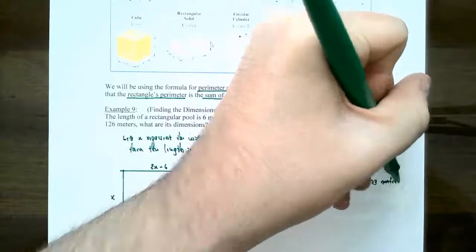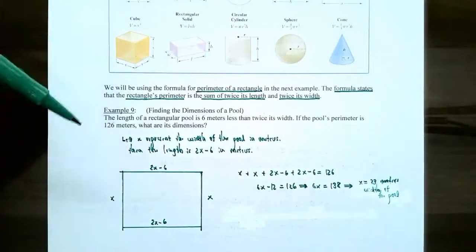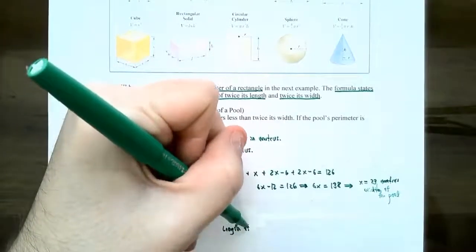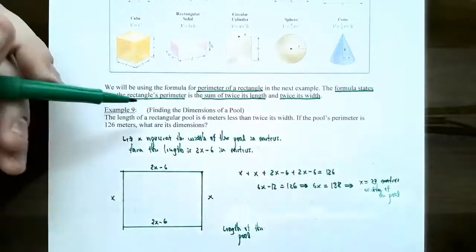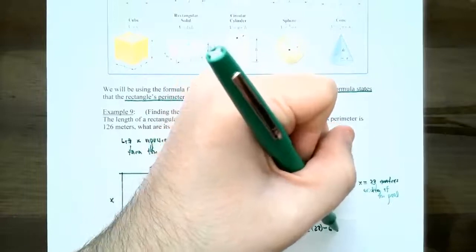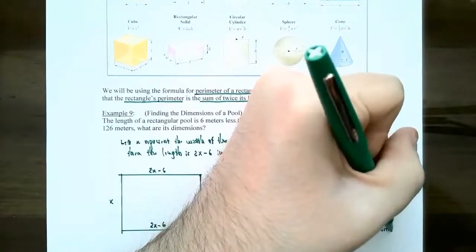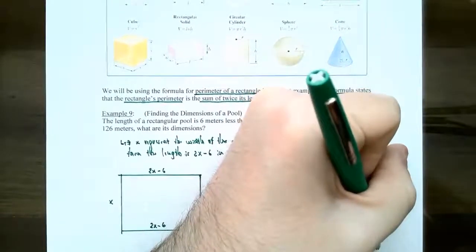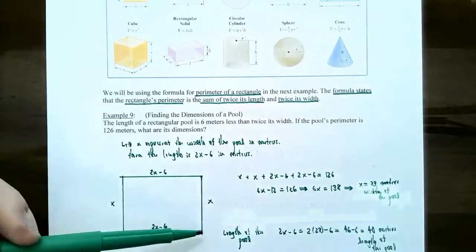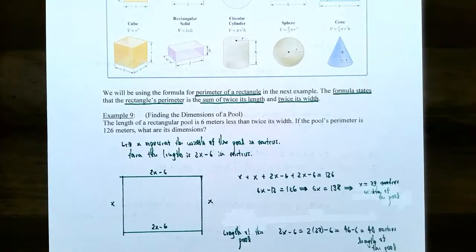We found the width is 23 meters, but we still need the length. The length was 2X minus 6: 2 times 23 minus 6 equals 46 minus 6 equals 40. The length of the pool is 40 meters. To check: 23 plus 23 plus 40 plus 40 equals exactly 126 meters for the perimeter — correct. The pool dimensions are 23 meters wide and 40 meters long.